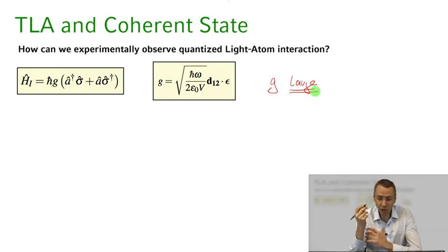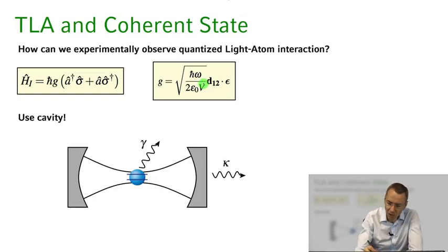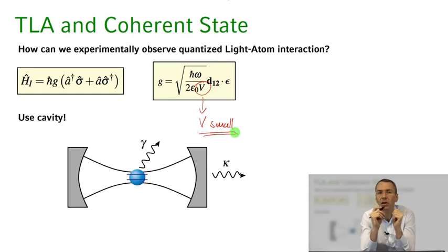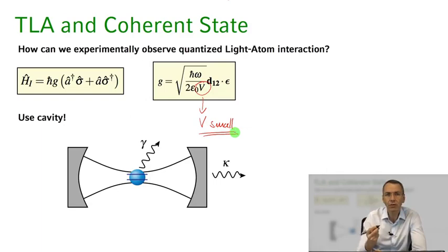One thing we can do is make the volume of the system — the box — small. This can be achieved by confining the light field between two closely spaced mirrors. For light fields at optical frequencies we could have just a few micrometers separation between those curved mirrors. The light will then bounce back and forth as it reflects from those mirrors in this so-called optical cavity.